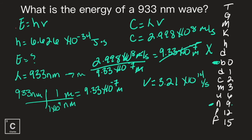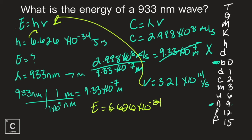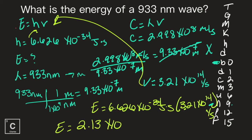Now I have frequency. I put it into the energy formula. Energy equals h: 6.626 times 10 to the negative 34 joule seconds, times 3.21 times 10 to the 14 per seconds. Energy equals 6.626 exponent key negative 34 times 3.21 exponent key 14 equals. With three sig figs I get 2.13 times 10 to the negative 19. My seconds cancel and I just get joules, which is the energy unit.